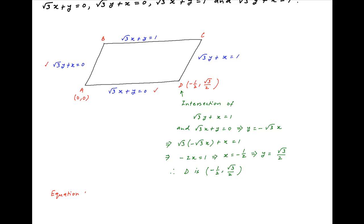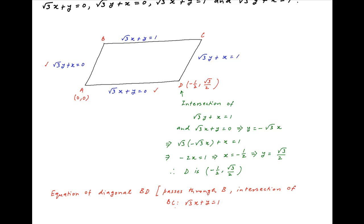The diagonal BD of the parallelogram passes through the point of intersection of lines BC and AB. The equation of line BC is √3x + y = 1, and the equation of line AB is √3y + x = 0.